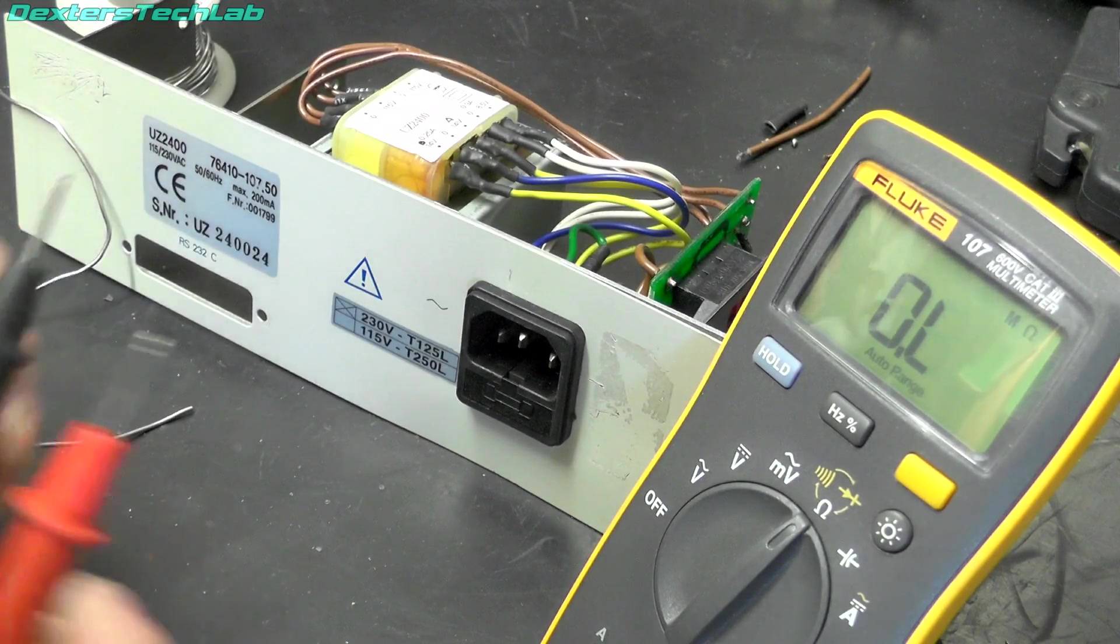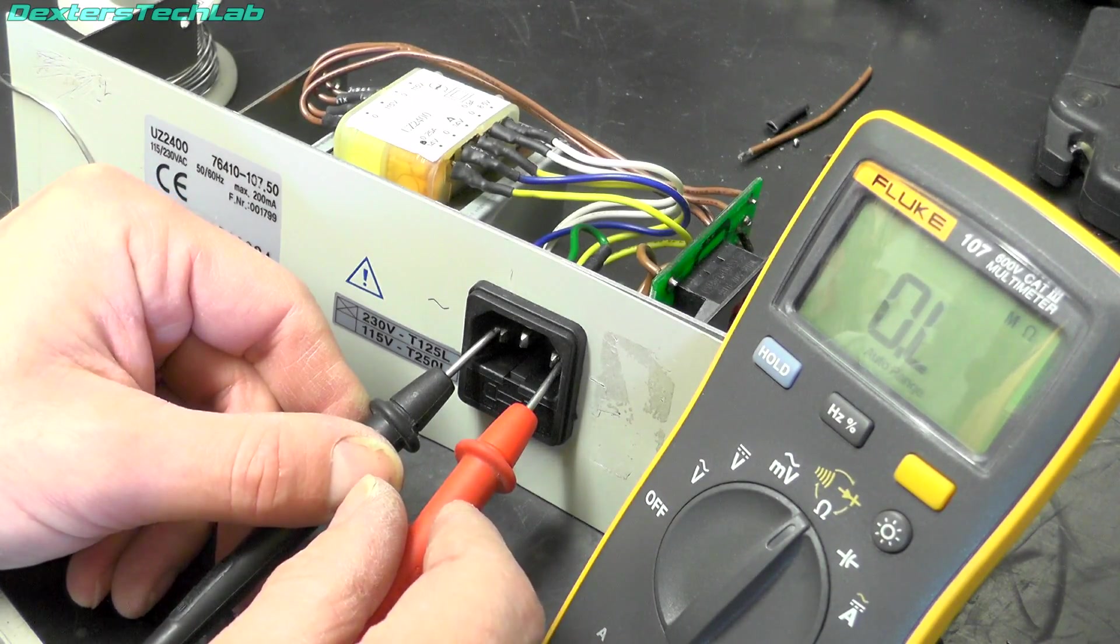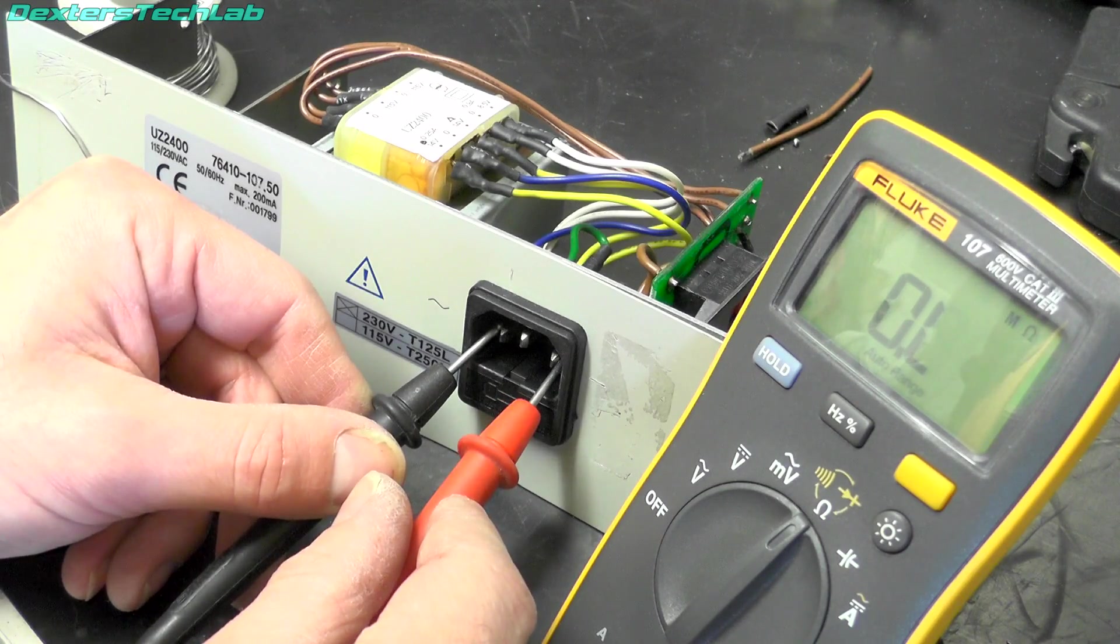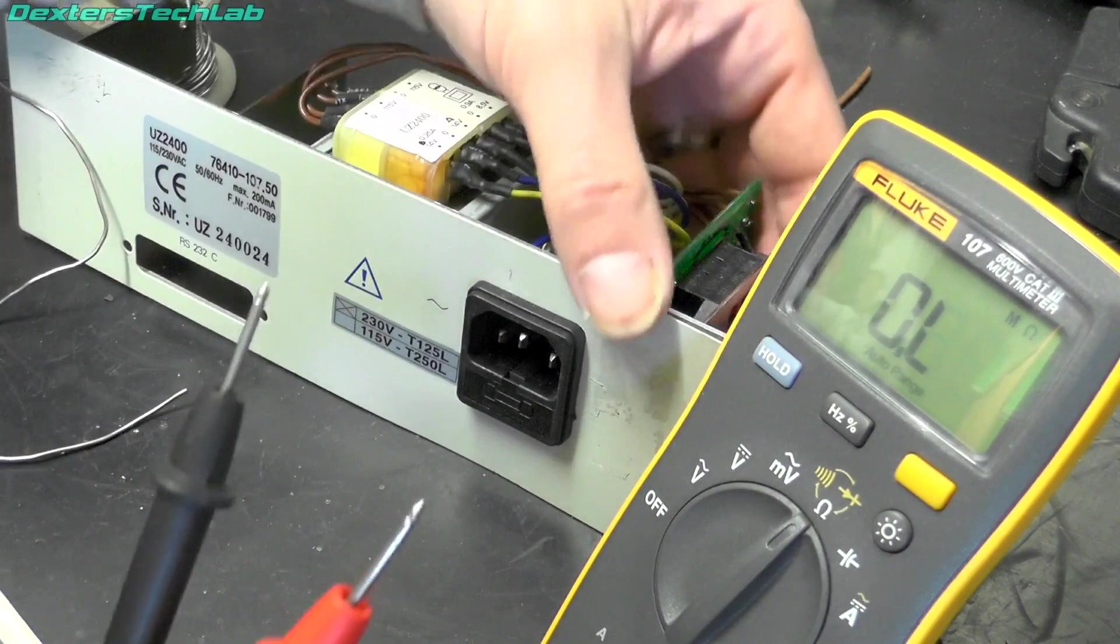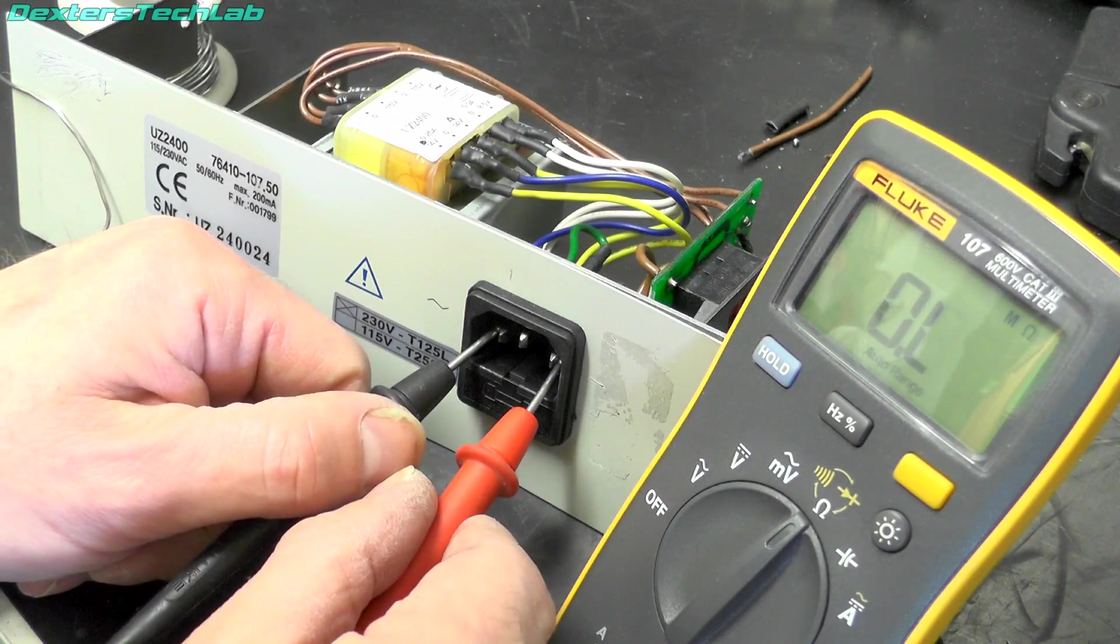Right, always good to check things on a multimeter so I've just got this in 11 ohms range so the switch is off so there should be nothing between those two, which is good. Click the switch on and we should get the resistance across the transformer.